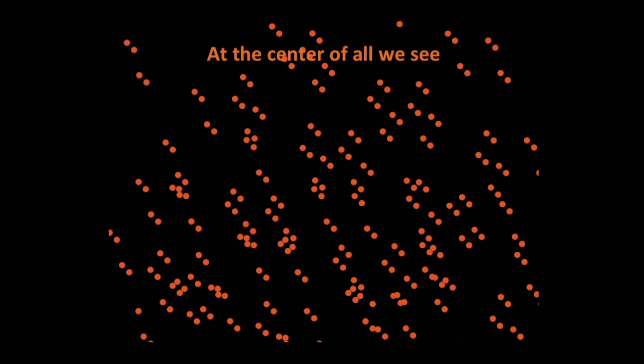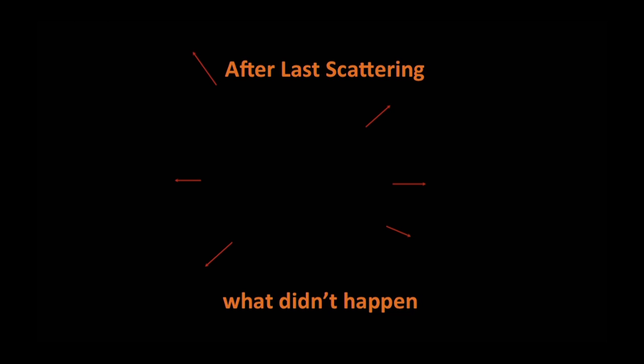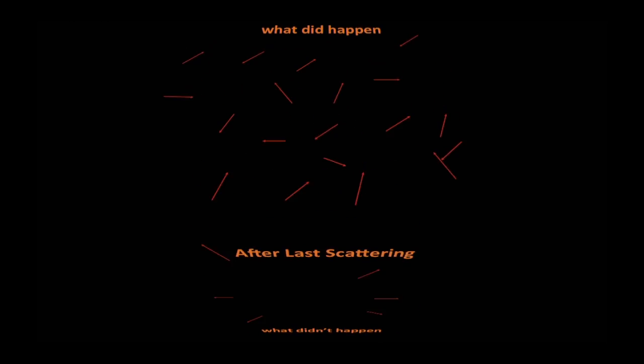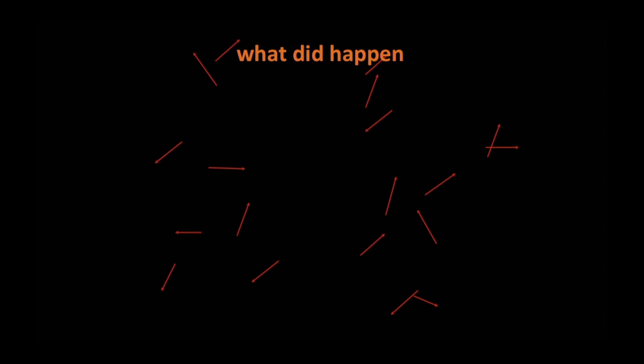Instead of drawing photons as arrows, let's represent them as little red dots moving around — traveling every which way through the universe. The common picture is a nice big hot spot isolated in space, with things moving outward from there in every direction. That's not what's really happening. What's really happening is that space is full of photons and other particles, moving in every direction — there is no special place.